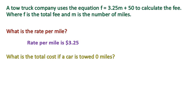What's the total cost if the car is towed zero miles? All right. To calculate that, we would take our original equation, 3.25m plus 50, and substitute the value of zero in there for the miles. So it would look like this, 3.25 times zero is zero, and zero plus 50 gives us 50. So the total fee would be $50 if you didn't tow any miles at all. So just the hookup fee or whatever.